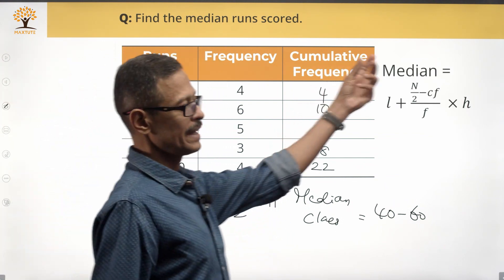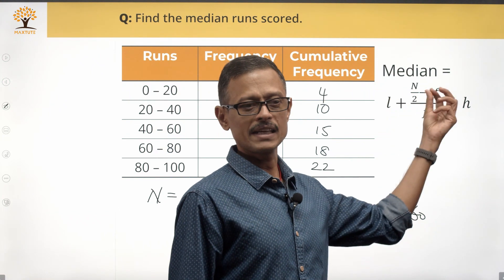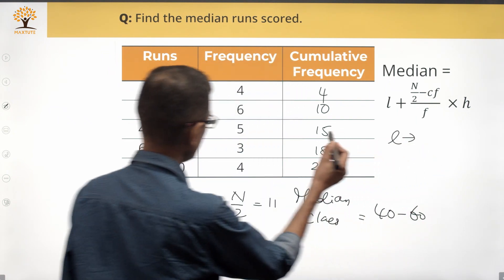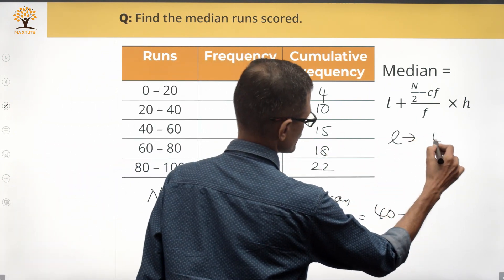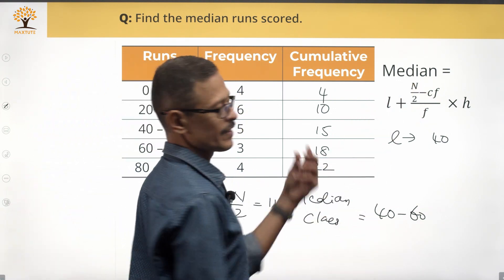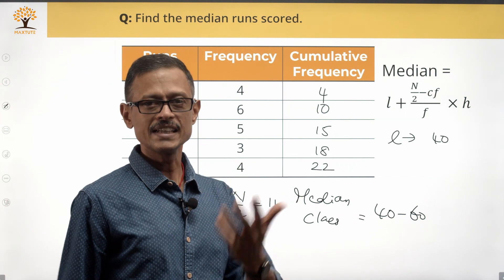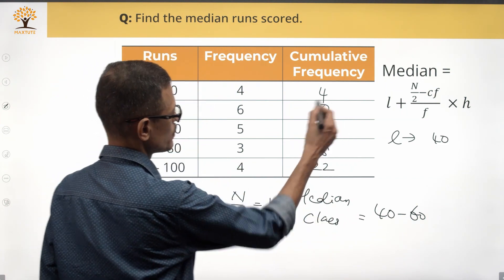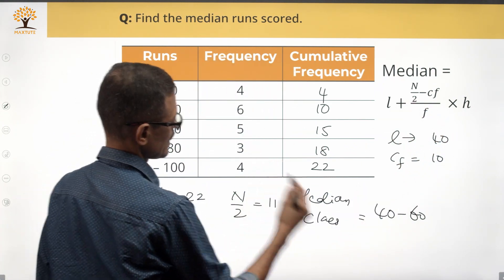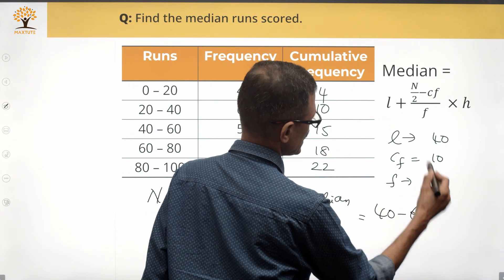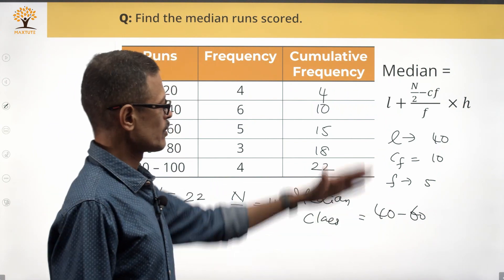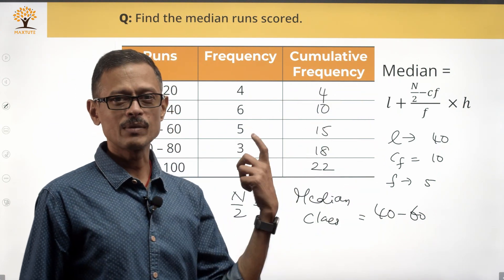Let's look at the formula to compute the median: Median = L + [(n/2 − Cf) / F] × H. L is the lower limit of the median class, which is 40. n/2 is 11. Cf is the cumulative frequency of the class preceding the median class, which is 10. F is the frequency of the median class, which is 5. H is the height (size) of each class interval, which is 20. We now have values for all components — let's plug them into the formula.